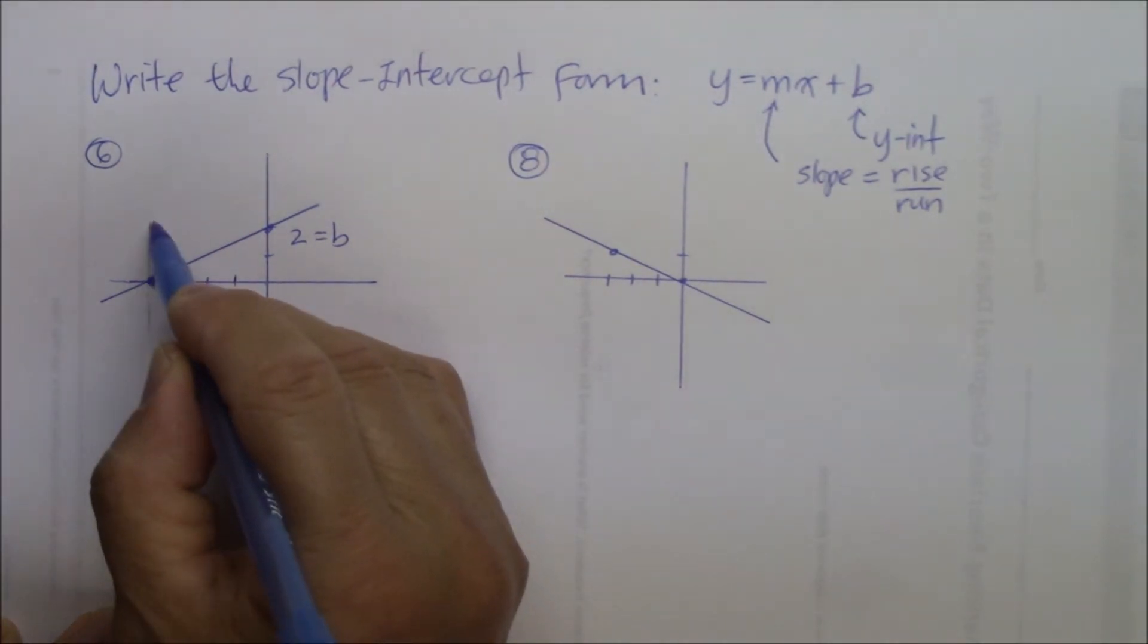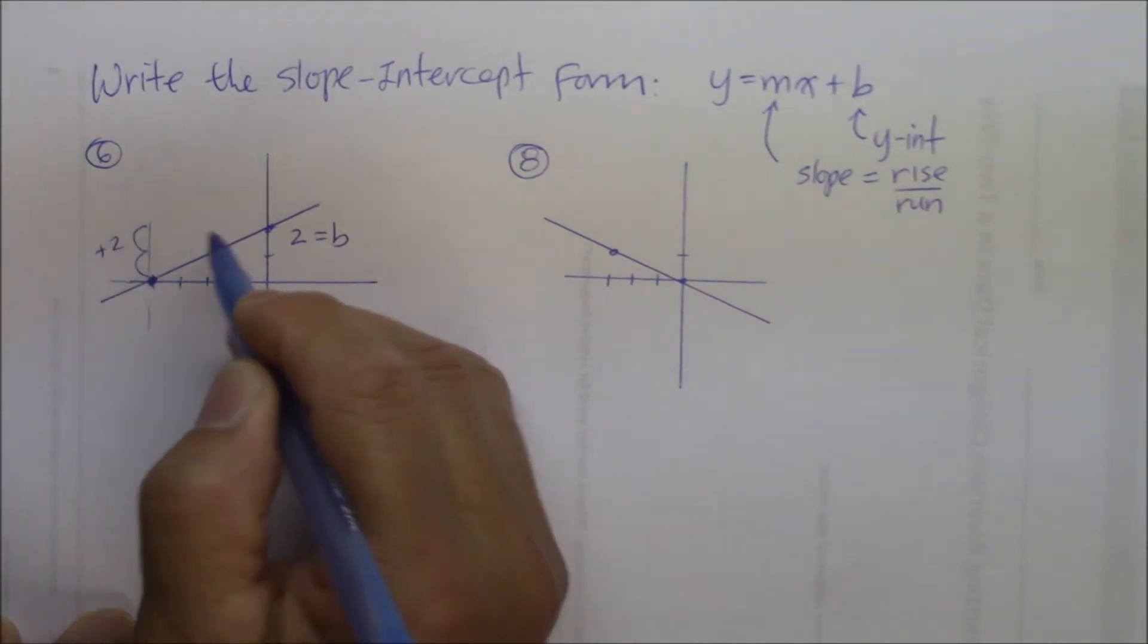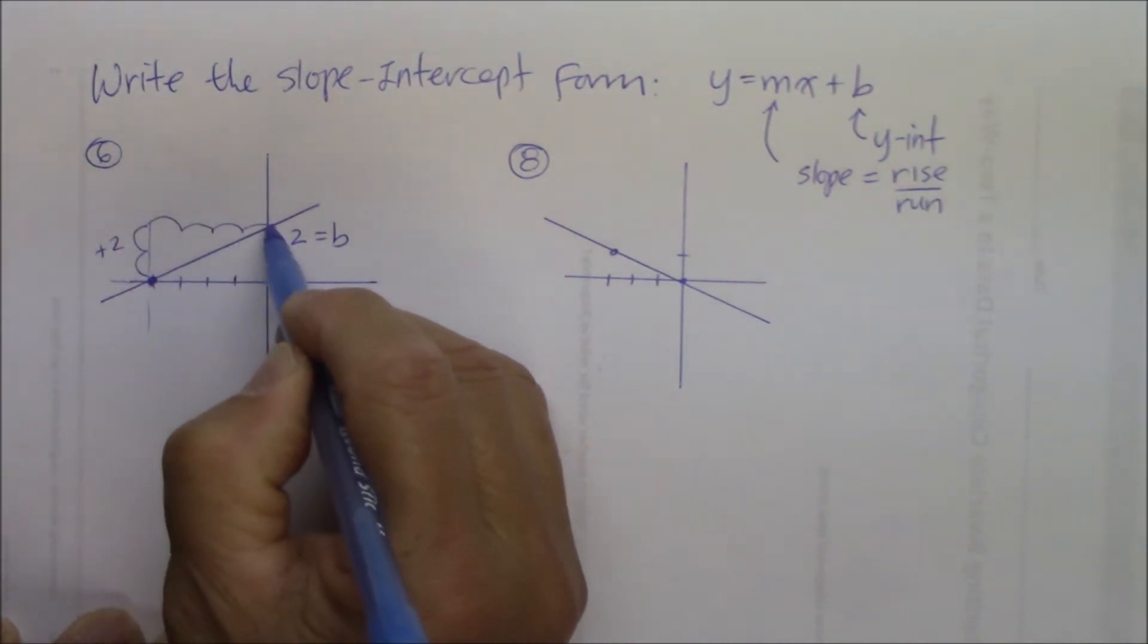What is the rise over run? The rate of change. So from here, to go there, we go one, two, two steps up, and one, two, three, four units right.